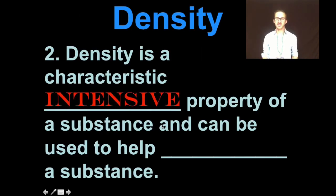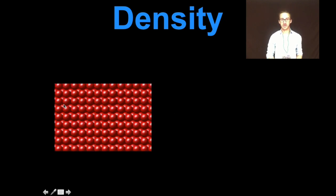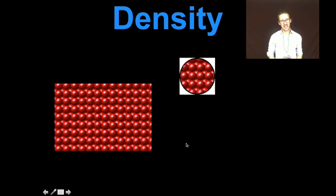Now, density is a characteristic intensive property of a substance, and therefore we can use it to help identify a substance. So, let's take a look at this magic, mysterious substance. I'm going to take two equal volumes of that exact same substance.